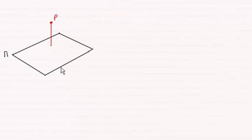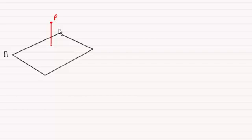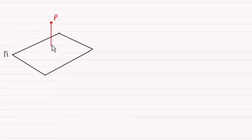Hi there. In this video I want to show you how we find the shortest distance of a point from a plane. Let's say that point is given by P and the plane is given by Pi. That shortest distance will be a perpendicular drawn from the point to the plane. In order to find this distance I need to take you back through some basic theory first.